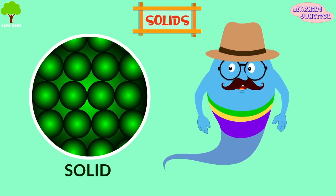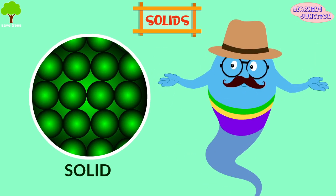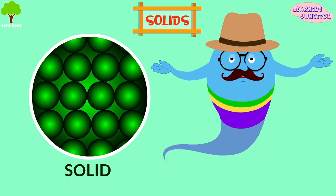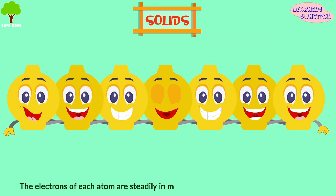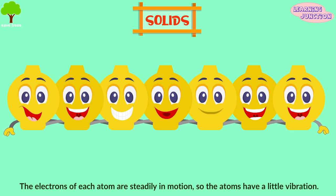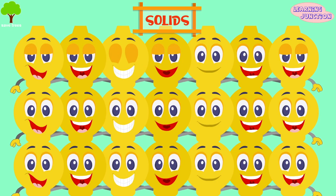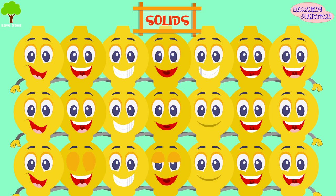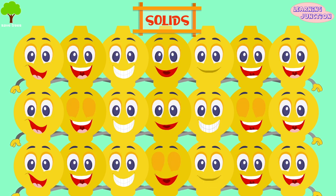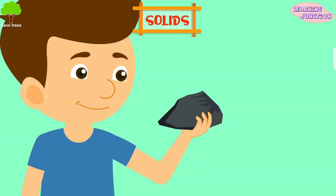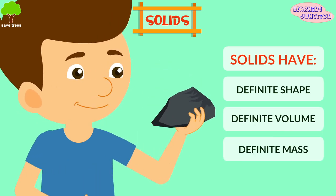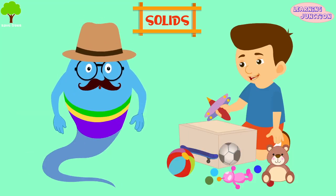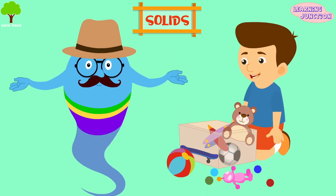Solids. In this state, the particles are tightly jam-packed together so they don't move much. The electrons of each atom are steadily in motion, so the atoms have a little vibration, but they are fixed in their place. Due to this, particles in a solid have very small amounts of kinetic energy. Solids have a definite shape as well as volume and mass, and do not comply to the shape of the container in which they're placed.